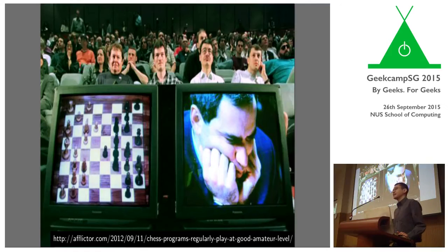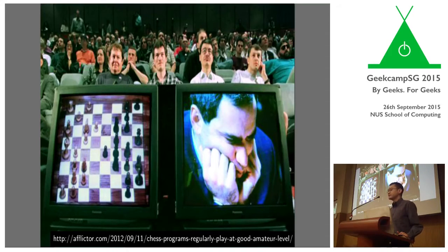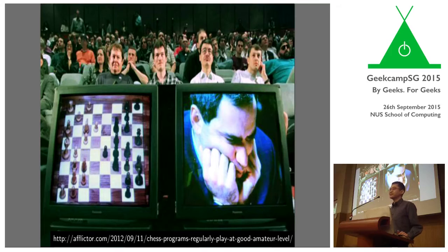Games have often been used as a benchmark of progress in computing, and we've often seen big companies put up exhibition matches. One of the most famous examples reported in the media is of course Kasparov versus Deep Blue. The rematch was won by Deep Blue, and that was a major publicity boost for IBM who created it.